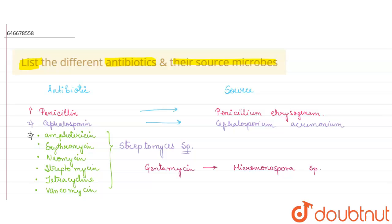Another antibiotic to mention is Rifamycin, also from Streptomyces. Additionally, Polymyxin B and Amphotericin B are certain antibiotics that act against bacteria. These are the list of antibiotics and their particular sources.